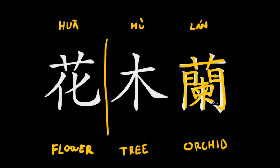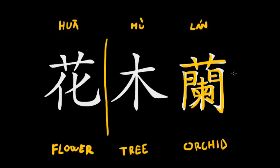Let me write this character one more time so you can concentrate on the writing: one, two, three, four, five, six, seven, eight, nine, ten, eleven, twelve, thirteen, fourteen, fifteen, sixteen, seventeen, eighteen, nineteen, twenty. There are 20 strokes in this character — it's quite complicated compared to the other characters in her name.